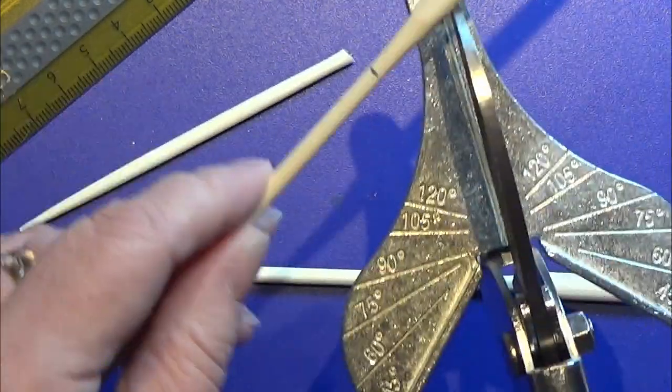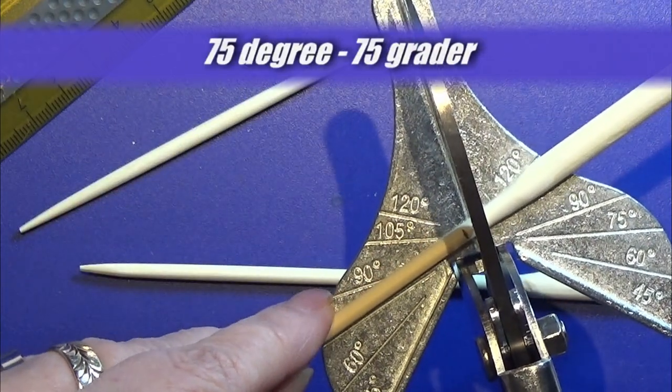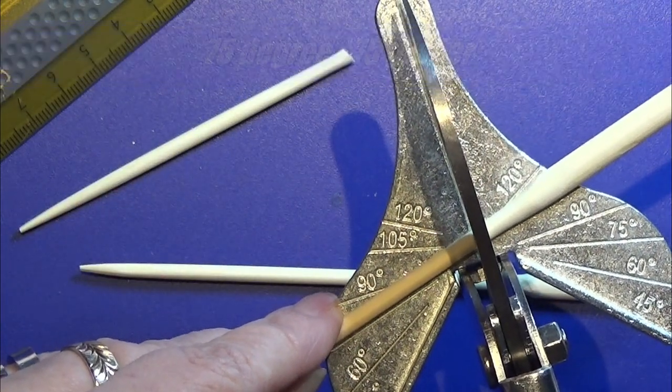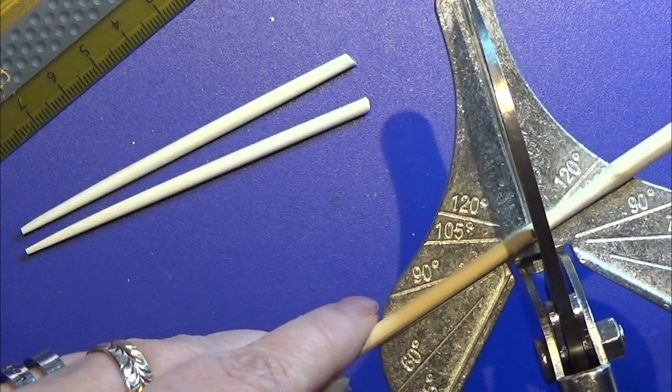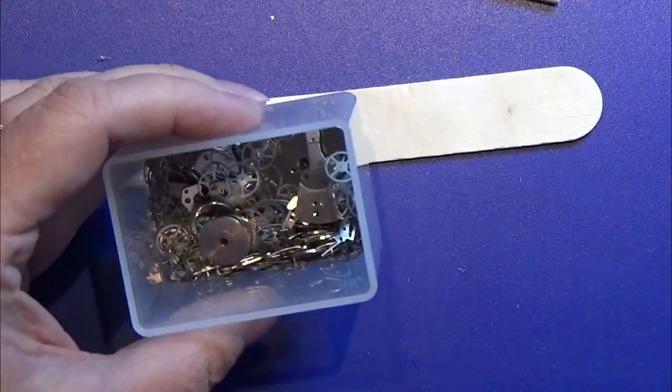So after that I am going to cut them all in an angle like you see me do here. This way they will stand out from the top part of the tripod. I sanded the cut a bit so they were nice and smooth.